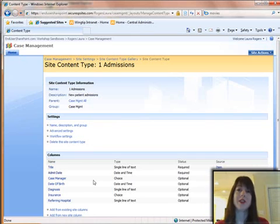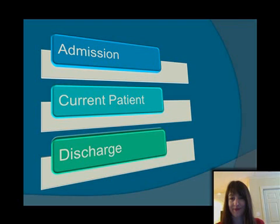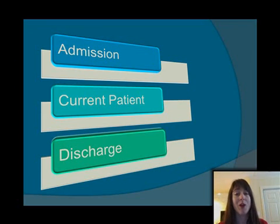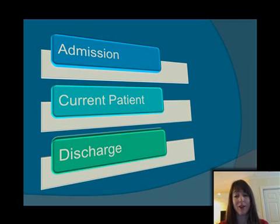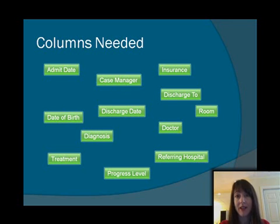Think about this in many different situations — any kind of list that has different status levels where different things need to happen at different stages. This graphic explains what I'm referring to when talking about putting site columns into site content types. Here are the three content types: Admission, Current Patient, and Discharge. These are all of the site columns we created, and we need to organize them into which content types they belong in, depending on what needs to happen at each different status of that patient.